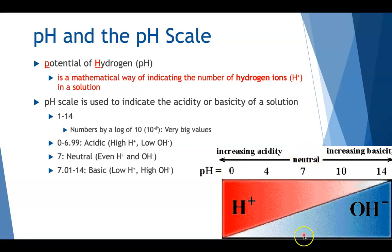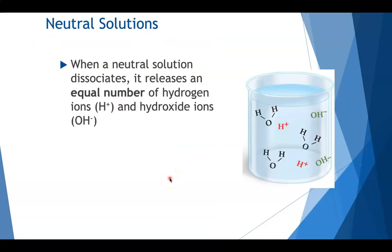7 is neutral. It's literally an even split. And finally, the same thing applies. By 7.01 up to 14, it's going to be more basic, or you're going to have a low amount of hydrogen ions, a high amount of these OH or hydroxyl groups. So let's break this down a little more.